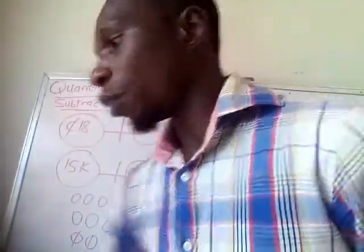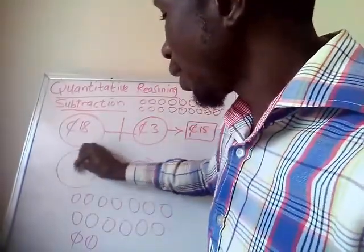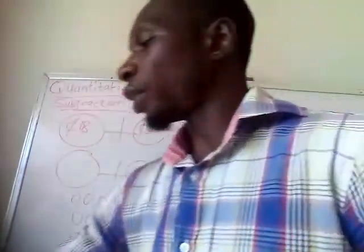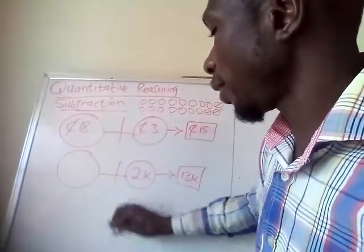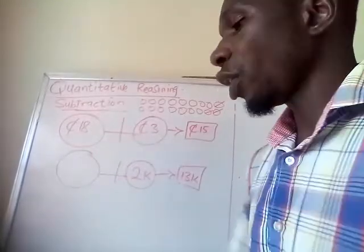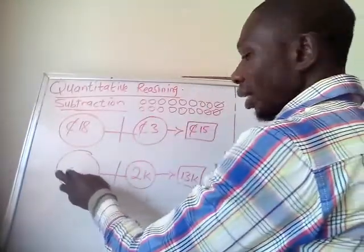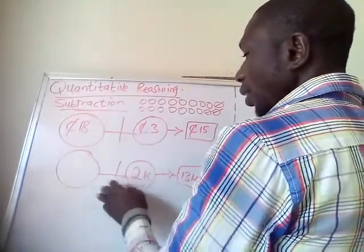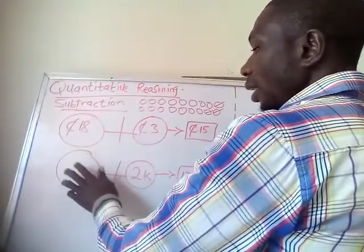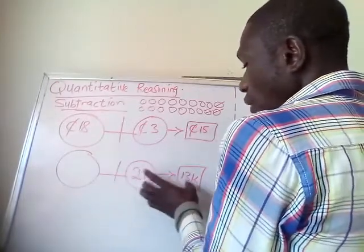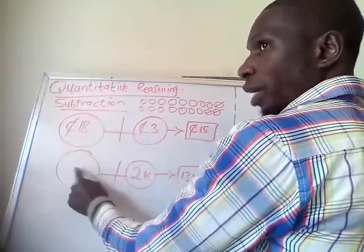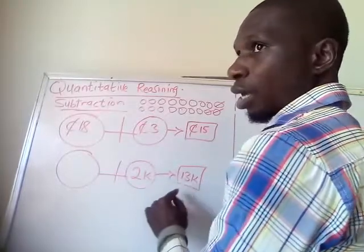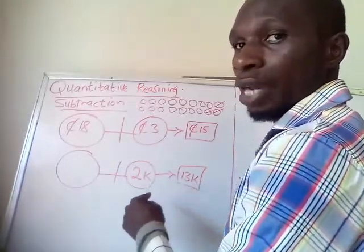There is another thing I would like to explain. Look at this — the 15 is missing here. You are expected to find this 15. Now, you know that you subtracted 2 from 15 and got 13. Since the main number is missing, instead of subtracting, you add the two numbers you have — adding them will give you 15.